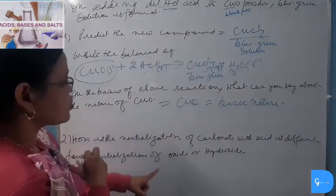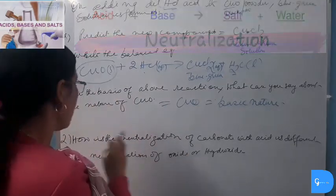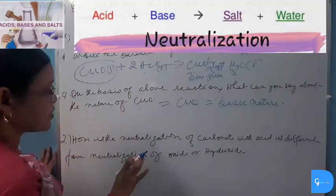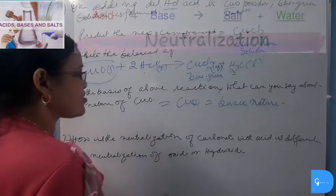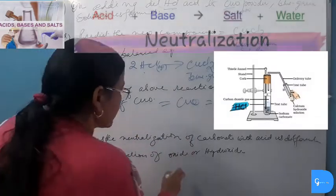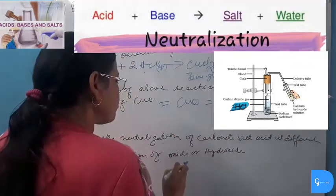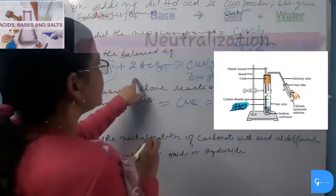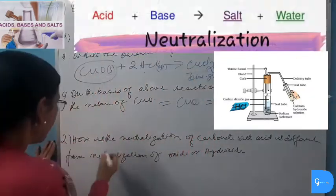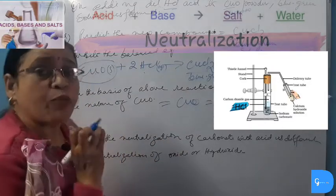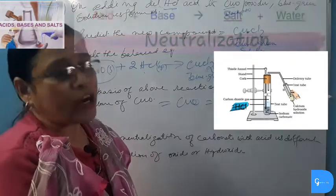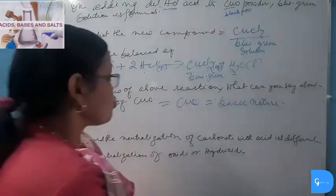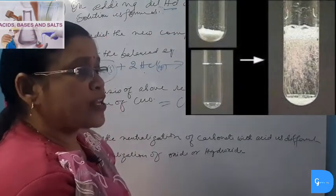How is neutralization of carbonate with acid different from neutralization of oxide or hydroxide? In both cases, neutralization occurs. But when carbonate reacts with acid, carbon dioxide gas is evolved along with salt and water. Whereas in neutralization of oxide or hydroxide with dilute acid, only salt and water are formed — no CO₂ gas is evolved.